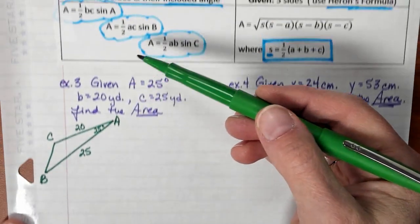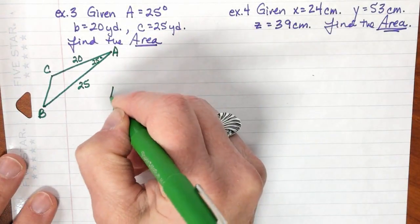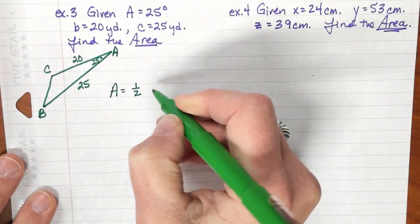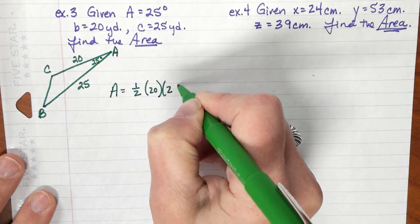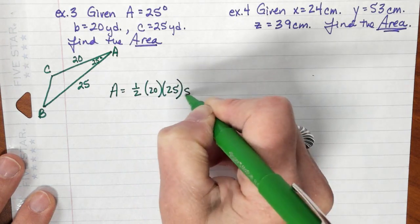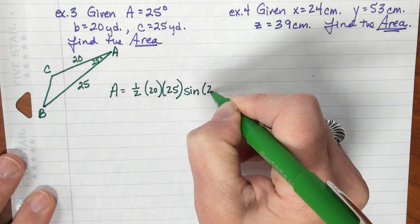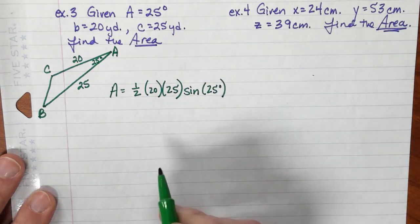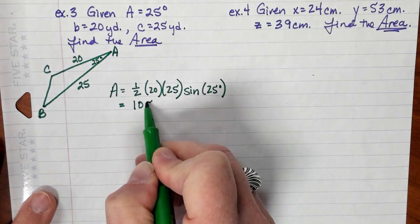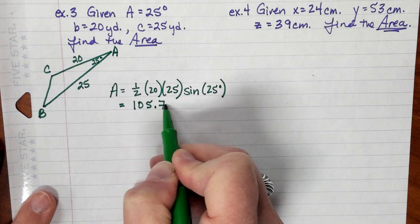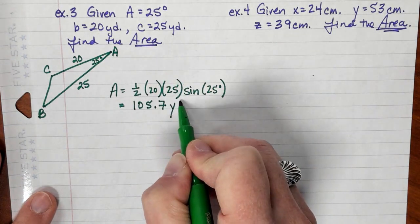So I have two sides and an included angle, so I'm going to use this formula. The formula tells me I'm going to take one half of my two sides, my 20 and my 25, and then I'm going to take the sine of that included angle which is 25 degrees. You get that product and you have 105.7, and no naked numbers, right? I'm dealing with yards here, so I have square yards.